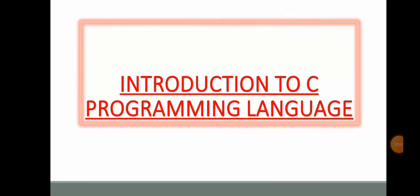Introduction to C programming language. C programming language is a general purpose procedural imperative computer programming language developed in 1972 by Dennis Ritchie at the Bell Laboratories to develop the UNIX operating system.